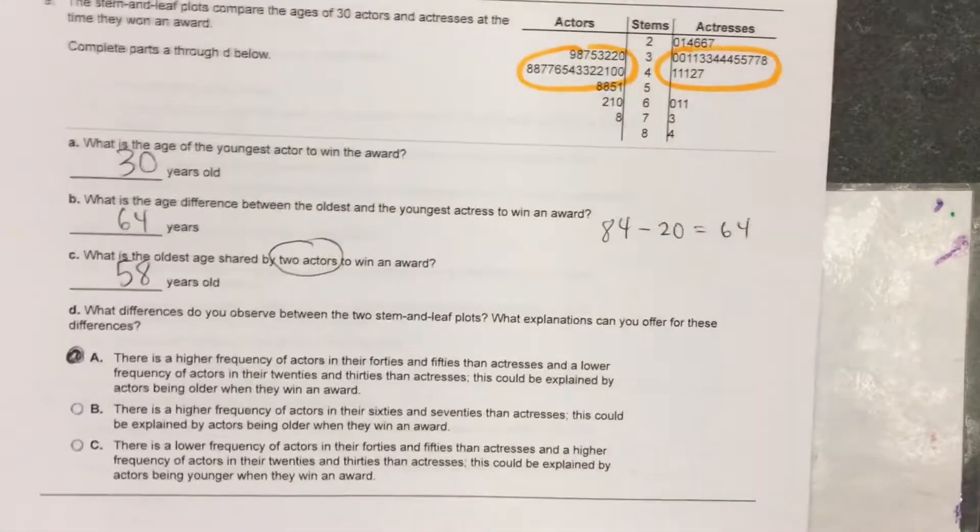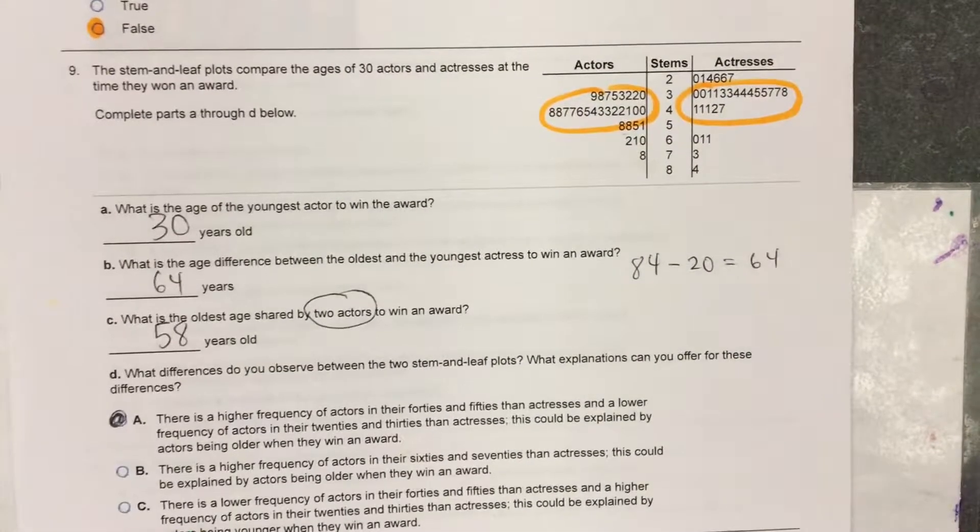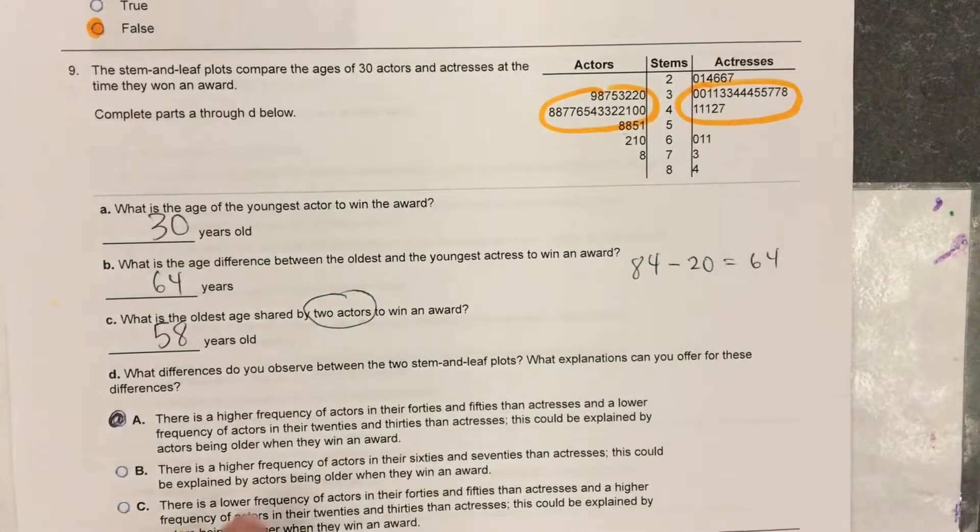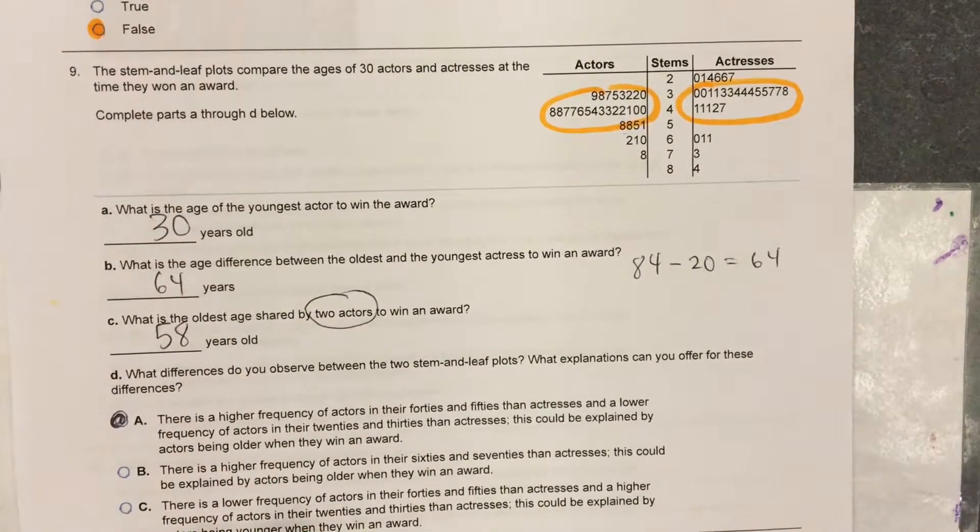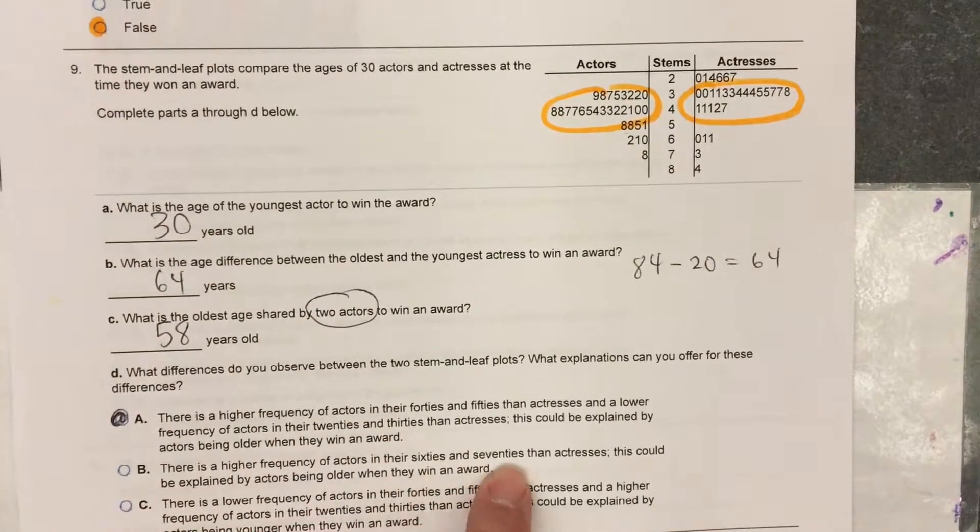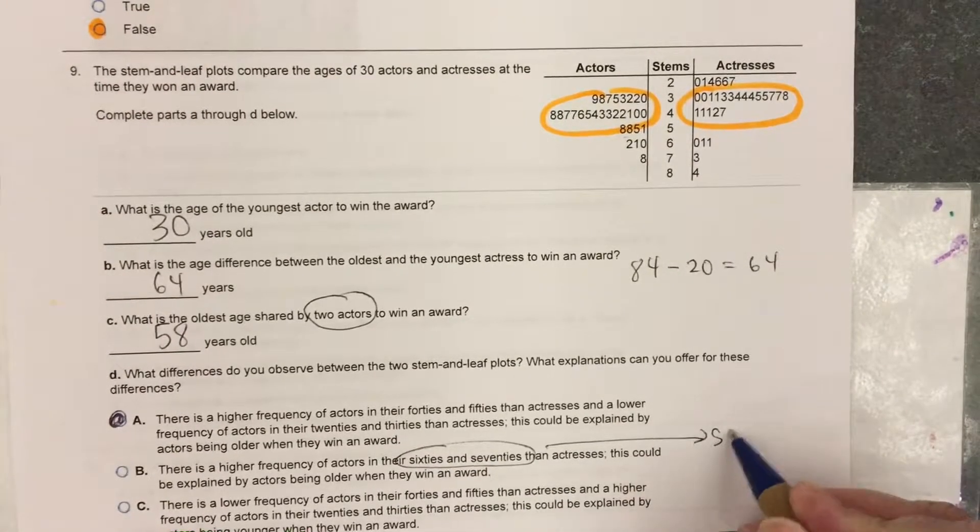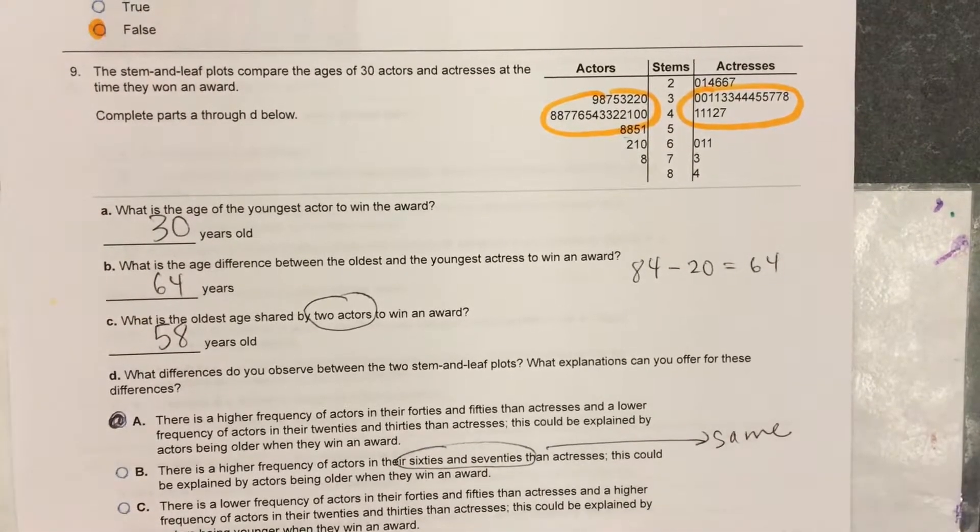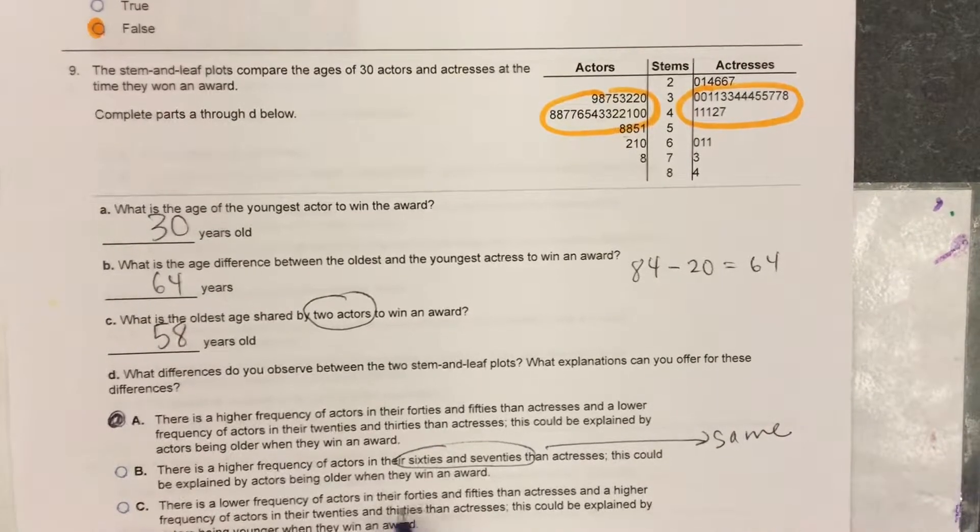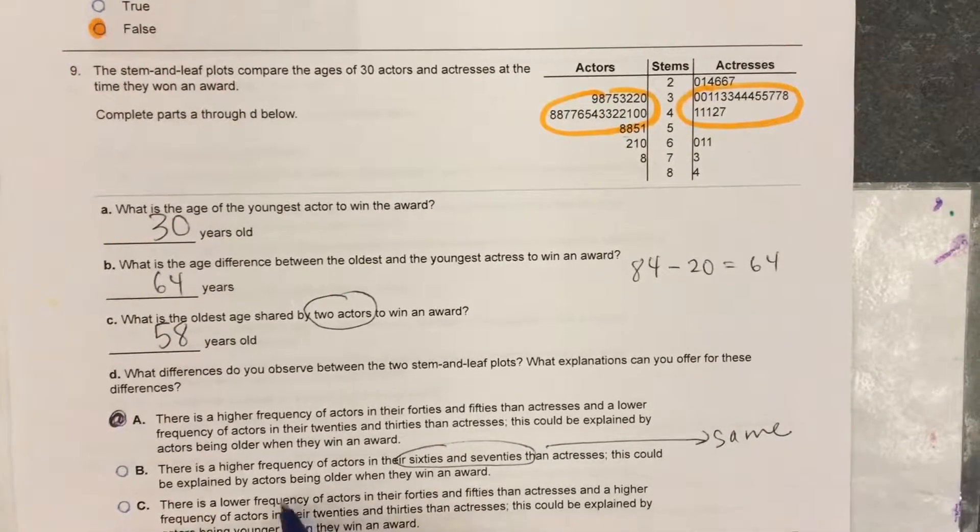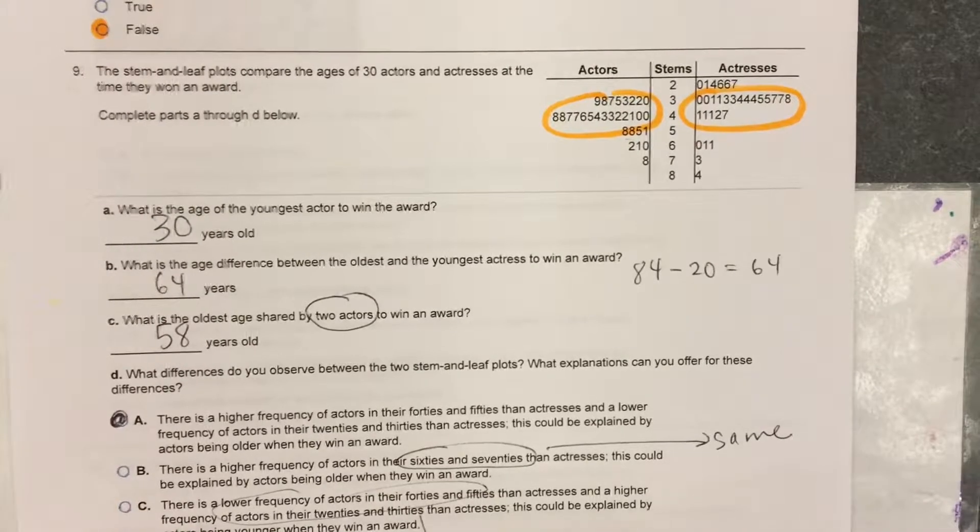If you read the other two choices, they're totally false. Part B says there's a higher frequency of actors in their 60s and 70s. No, they're the same there. There's a lower frequency of actors in their 40s and 50s than actresses. That's just flat-out false.